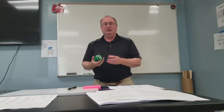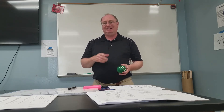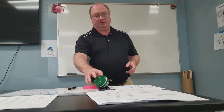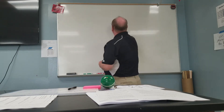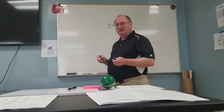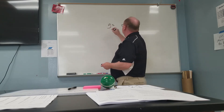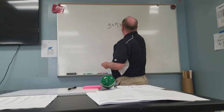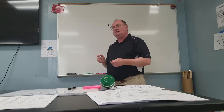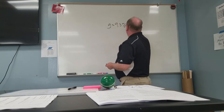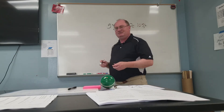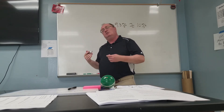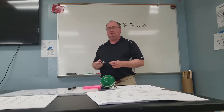On Earth, the acceleration an object has when it's falling is going to be 9.8 meters per second squared. That's the acceleration due to gravity on the Earth. We use it so much we actually give it a special letter, little g. Now, sometimes to approximate things, we might round it off to 10 meters per second squared, just to make the calculations a little bit easier. But for the most part, we're going to use 9.8 meters per second squared each time.